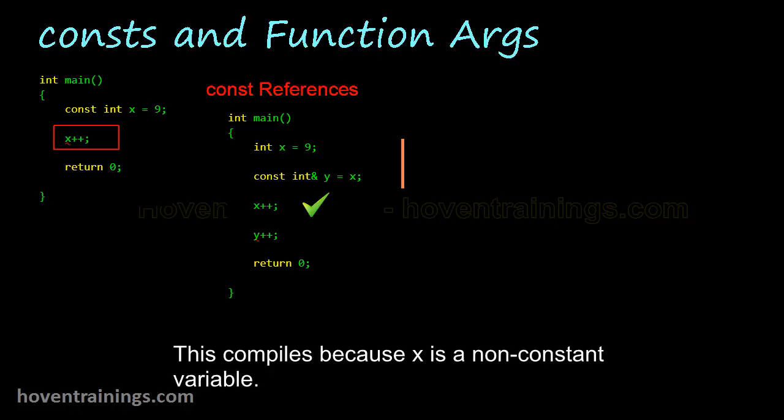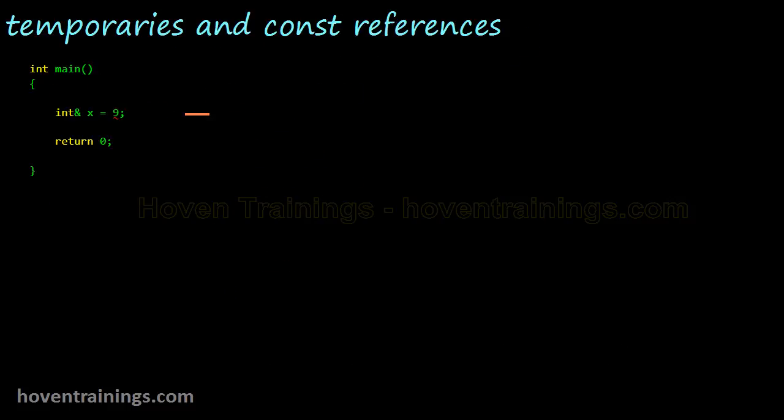This compiles because x is a non-constant variable. This is a compiler error because y is a constant. This statement is a compiler error.